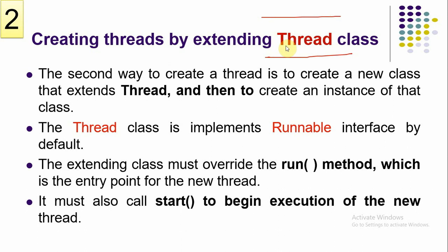We create a subclass by extending from the Thread class. It's important to understand that the Thread class already implements the Runnable interface, so when you create a subclass you are extending Thread and also implicitly implementing Runnable. The run() method is already implemented by Thread class.